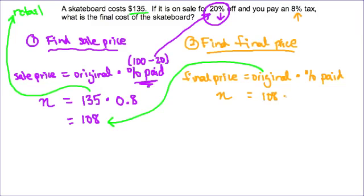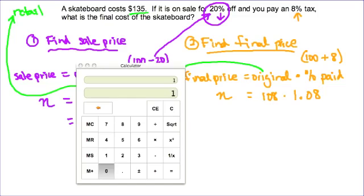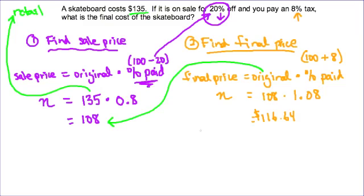And the percent paid is 100%, that's the original, plus the 8% tax. So I'm really paying 108%. Remember, tax is an increase, so the number has to be above 100. And 108 as a decimal is 1.08. So I get my calculator out. 108 times 1.08. So this is how we can use an equation to actually figure out the final price of an item by using a couple of different steps.